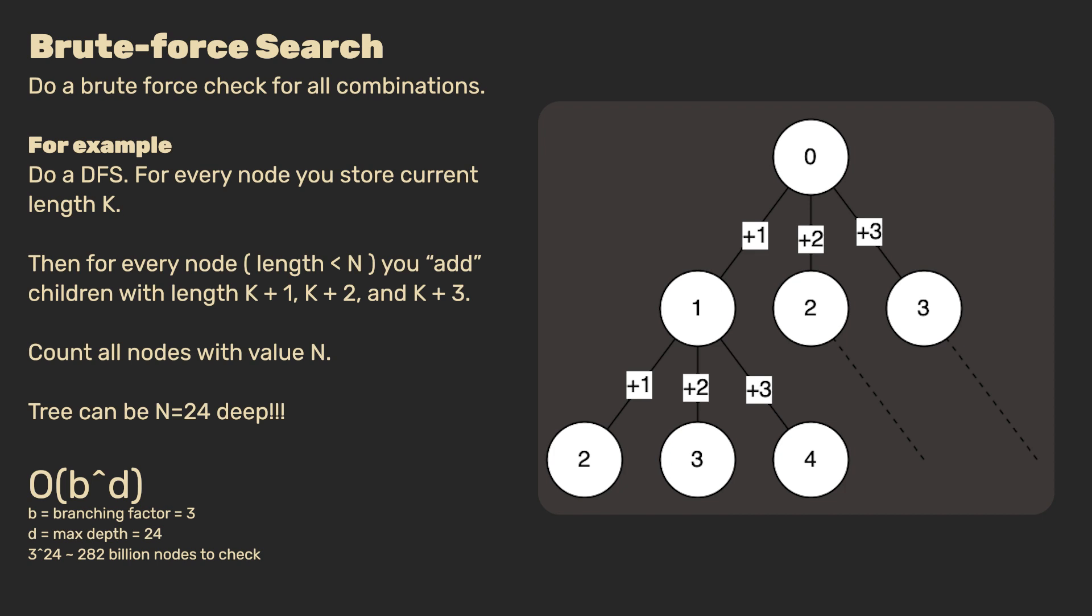Unfortunately for us, this solution is on the order of b to the power of d, where b is our branching factor of 3, and d is our maximum depth of 24. Our computers these days are fast, but in competitive programming, we simply cannot check all these 282 billion nodes fast enough. Of course, we can do better.